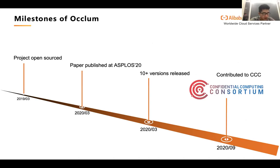The Occlum project was open sourced in March 2019. A companion research paper was published in March 2020 reporting the novel aspects of this project. The project is being developed rapidly, releasing a new version each month. Last month, it reached an important milestone: we contributed the project to the Confidential Computing Consortium (CCC), which is a Linux Foundation project and community dedicated to confidential computing. By contributing to CCC, we believe Occlum can benefit more users and gain more momentum in its development.